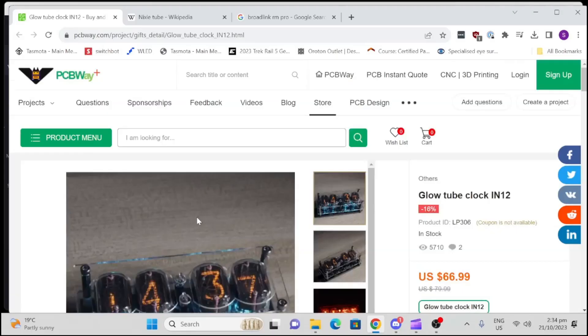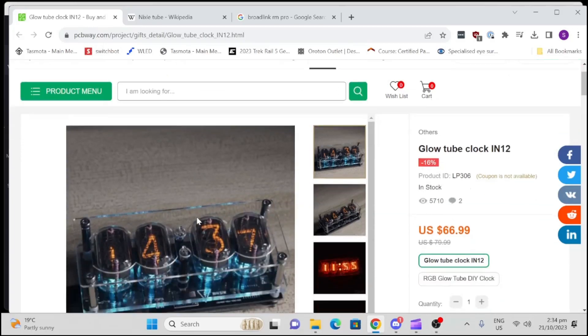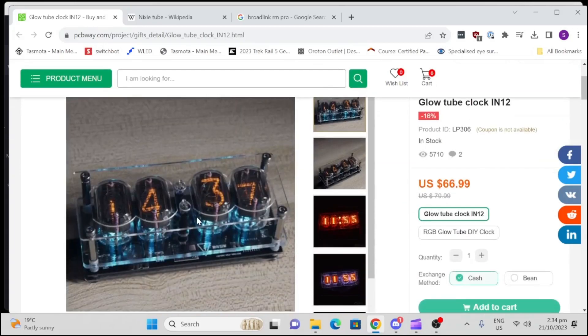PCBway was recently kind enough to send me one of these awesome little Nixie clocks. These are amazing clocks that use Nixie tubes, or something similar to what was made back in the 70s for displaying information. These are going at a real good price at the moment, $66.99 US, and you can click the link below if you want to order one.